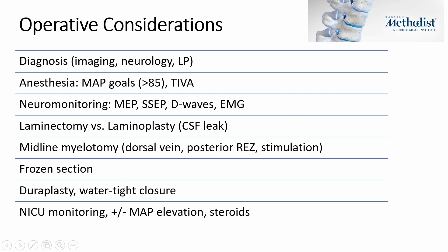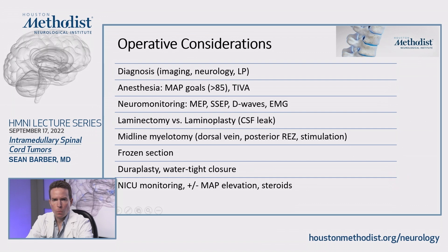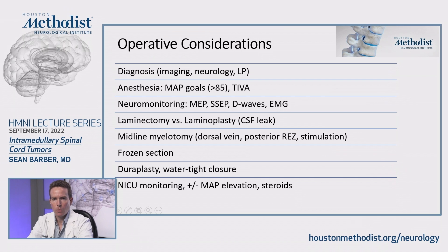Several important considerations when operating on these tumors: first, diagnosis. You don't want to open up someone's spinal cord unless you're confident there's a tumor. If there's no cord expansion or some unusual history, it may be worthwhile to pursue further workup with lumbar puncture or neurology consult, to ensure this is not demyelination or something other than tumor.